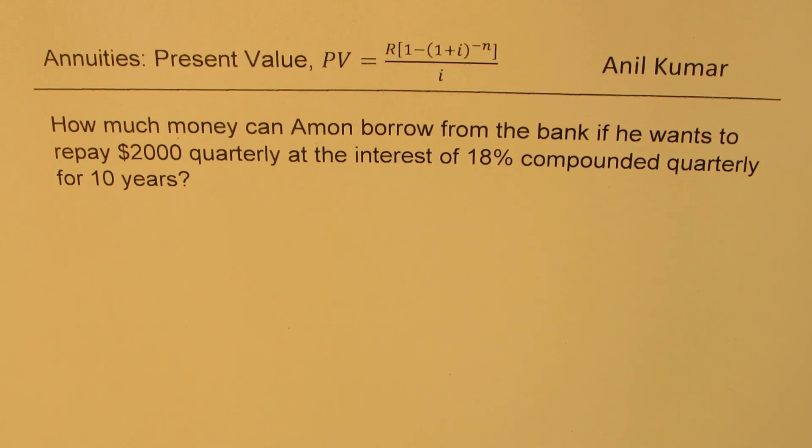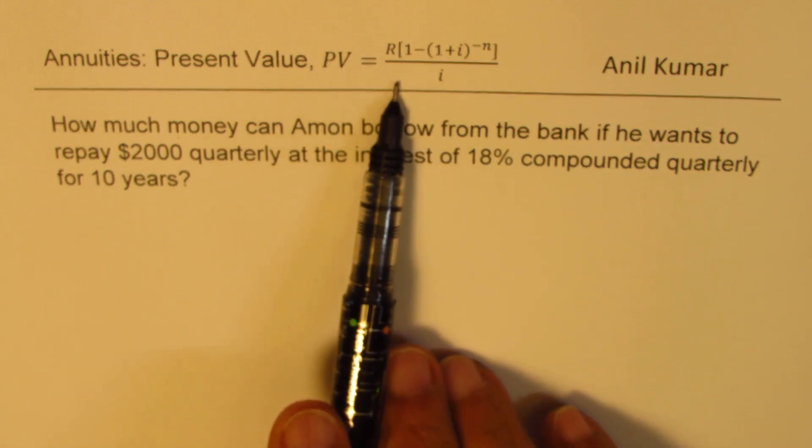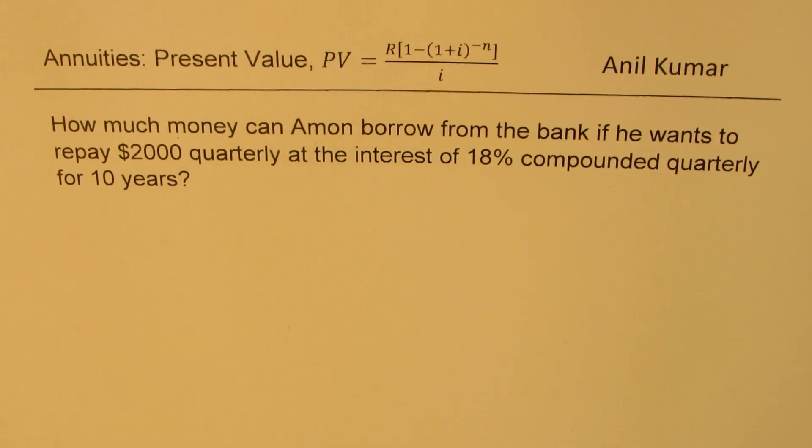The question here is, how much money can Amun borrow from the bank if he wants to repay $2,000 quarterly at the interest of 18% compounded quarterly for 10 years? I also provided you the present value formula which can be applied to solve this question.